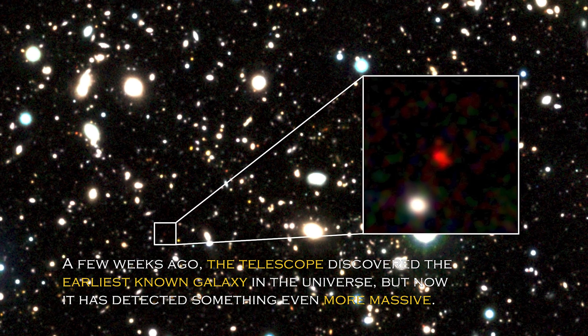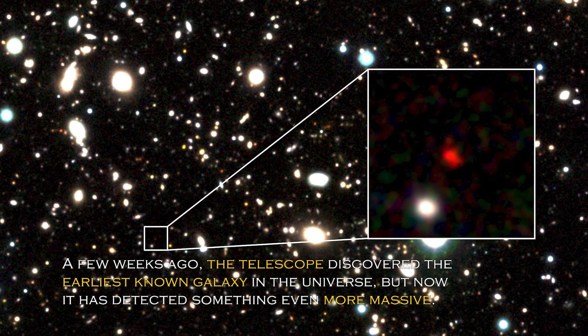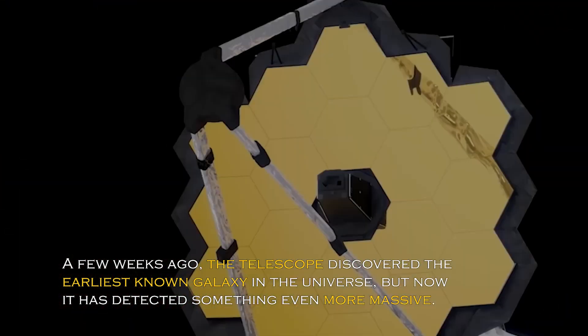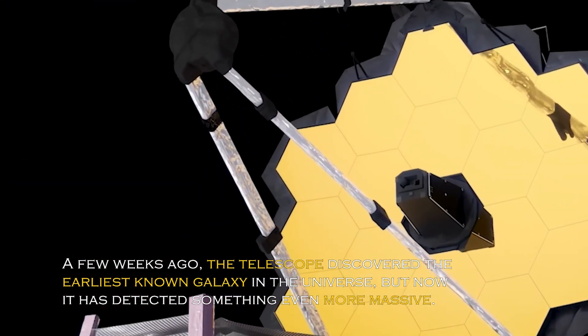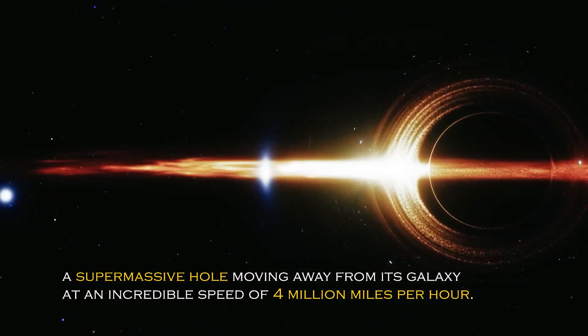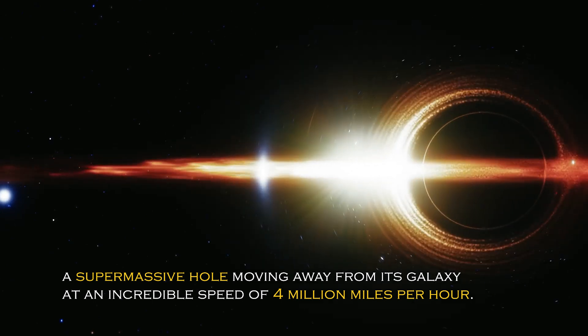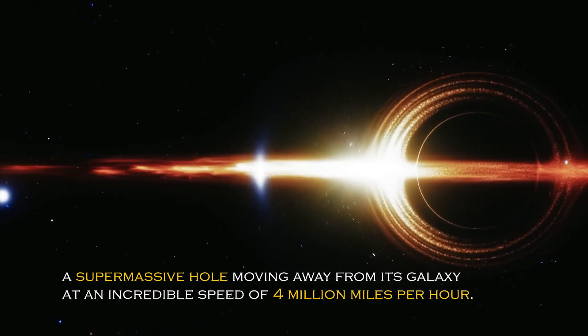A few weeks ago, the telescope discovered the earliest known galaxy in the universe, but now it has detected something even more massive – a supermassive black hole moving away from its galaxy at an incredible speed of 4 million miles per hour.